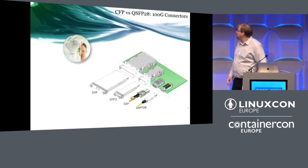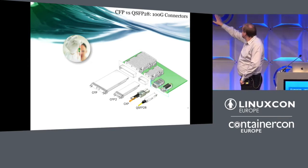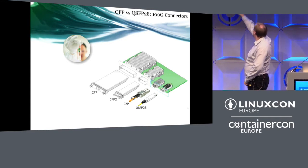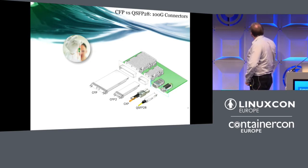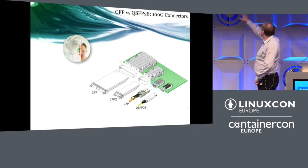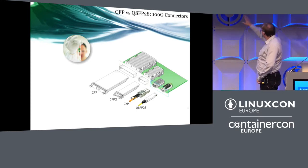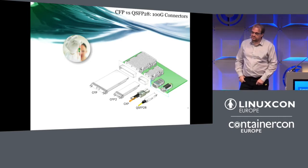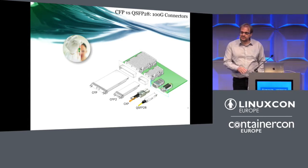Regarding form factors: the CFP, 10 times 10, has been around a long time but requires a lot of power and complexity. Then CFP2, a shrink of that; then CXP, another shrink. And then there's the QSFP28, the new connector you know from 10G — it looks and works the same way. With QSFP28, we can upgrade our existing 10G infrastructure to 100G.